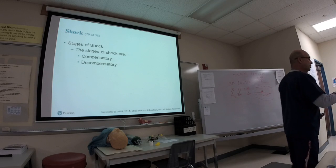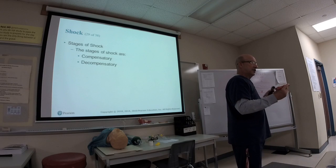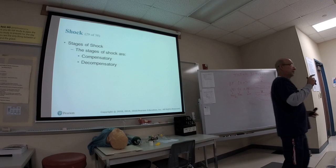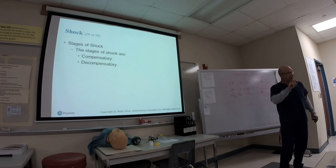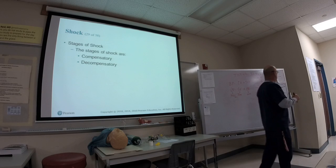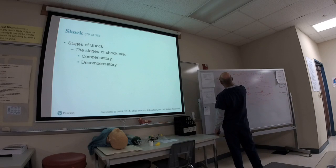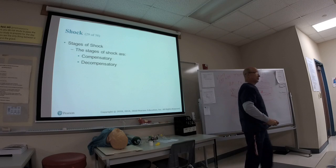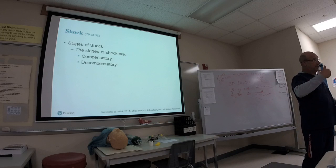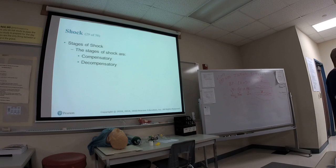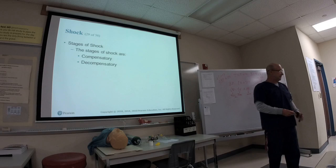On exam questions about shock, you'll need to identify whether the patient is compensating or decompensating. In decompensated shock, the systolic blood pressure is usually below 100. If a scenario shows the patient is tachycardic with a blood pressure of 80/60, they're in decompensated shock. In compensated shock, the patient is tachycardic but has a normal blood pressure.